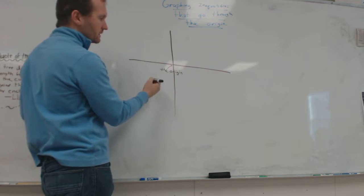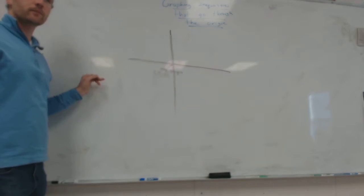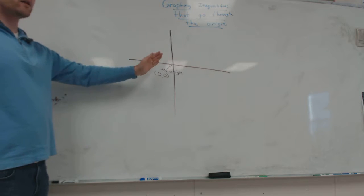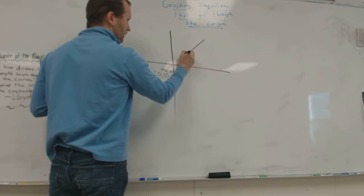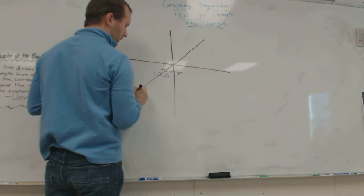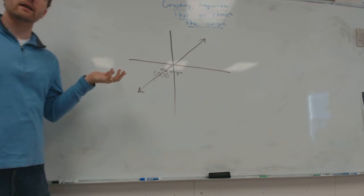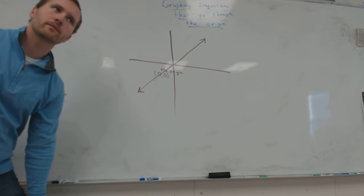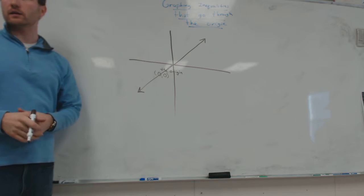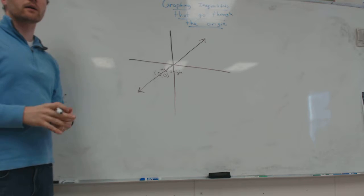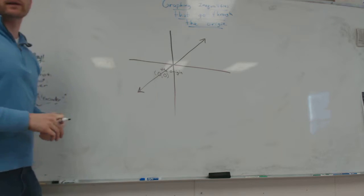The coordinates of the origin are zero, zero. So that's what I mean. What if we have a line that goes through that point? Today we're going to talk about how can we graph that as an inequality. It's going to be a little bit tricky.